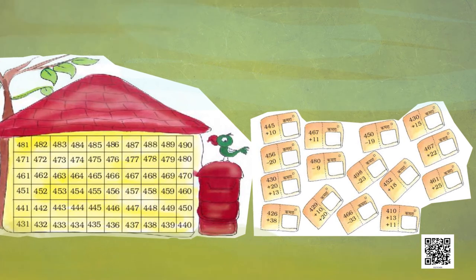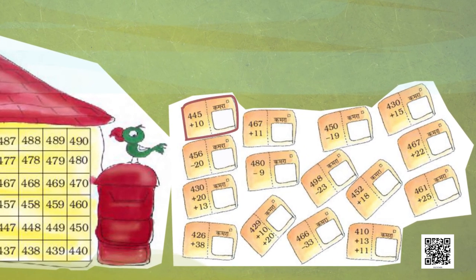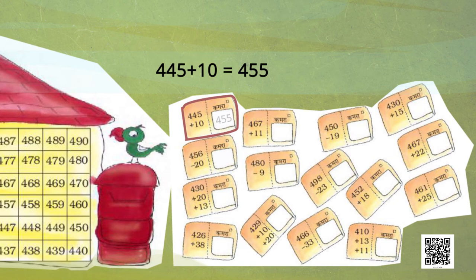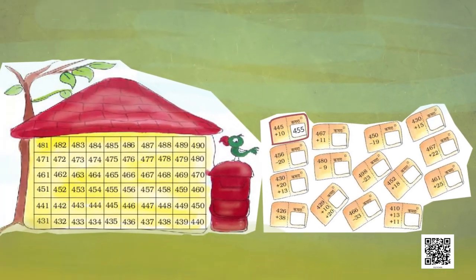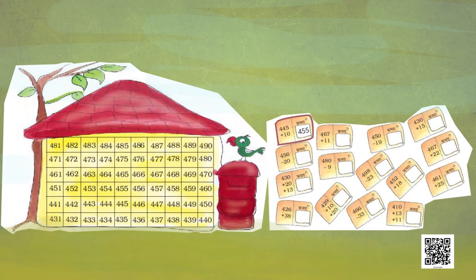Look at this envelope: 445 plus 10. So what is the room number? Add 10 to 445 — the answer is 455. So this letter has to be delivered to room number 455. Can you find it? Yes, here it is — 455!